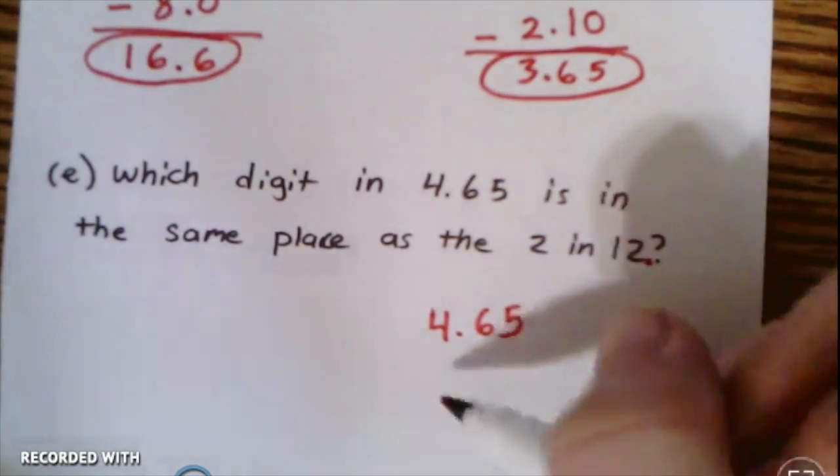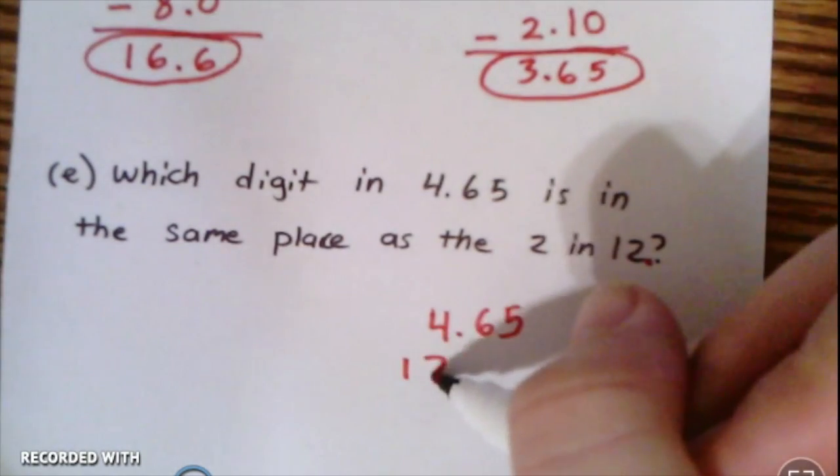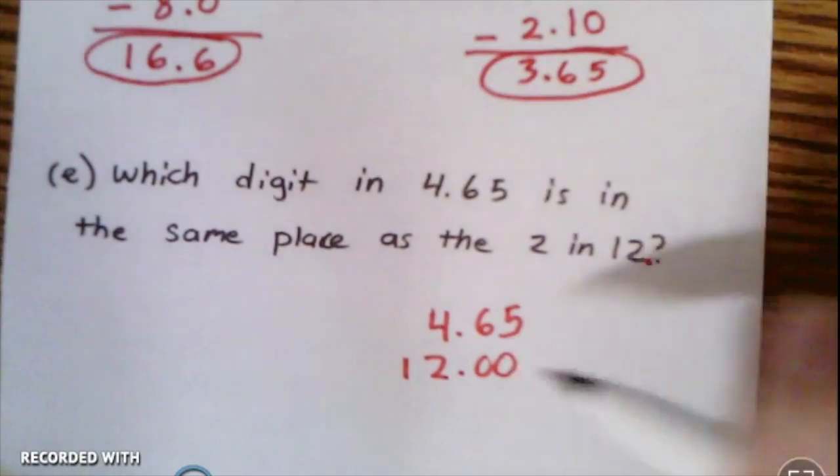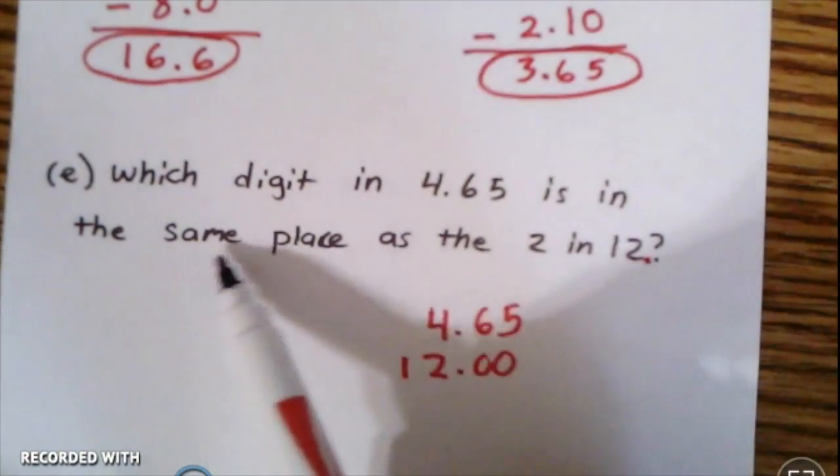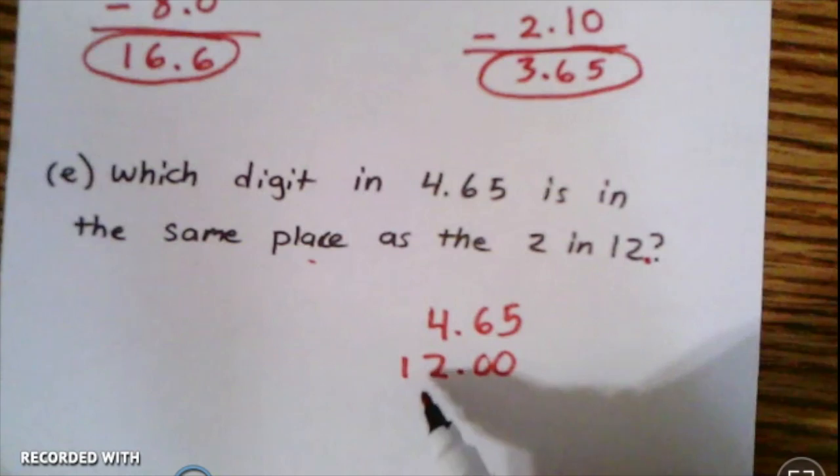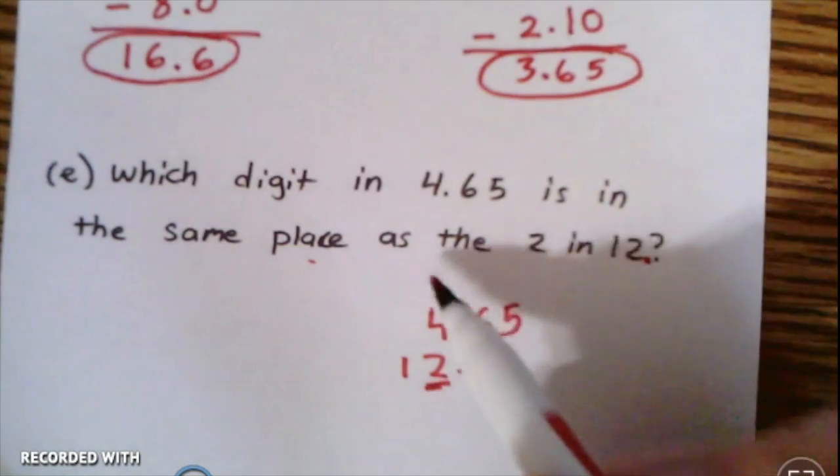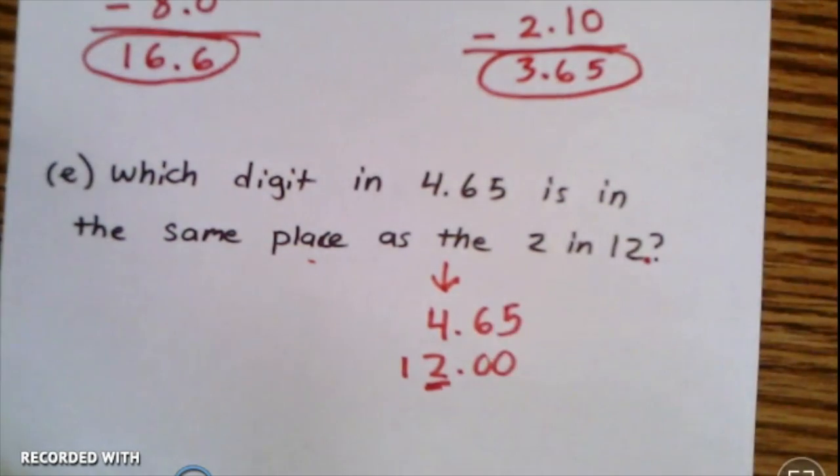So here I've got 4.65 and then I've got 12. Which digit in this is in the same place as the 2? The 4.